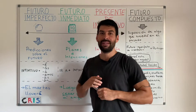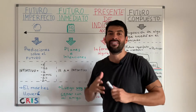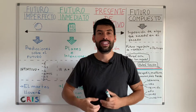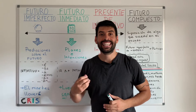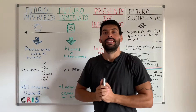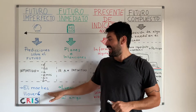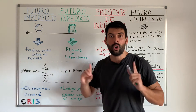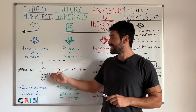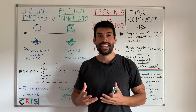En cambio tenemos el futuro imperfecto, que lo utilizamos cuando hablamos de predicciones sobre el futuro o cuando hablamos de hechos o cosas que sucederán pero tienen poca certeza, sin embargo existe la posibilidad. En este ejemplo es: el martes lloverá. ¿Cómo utilizamos este futuro? ¿Cómo lo conjugamos? Utilizando el infinitivo y estas terminaciones dependiendo del pronombre personal del cual se esté hablando.